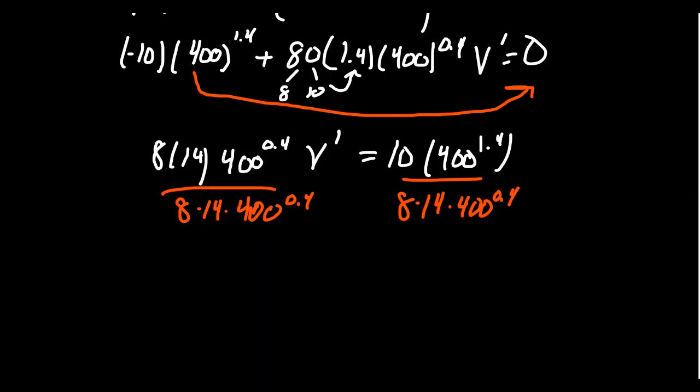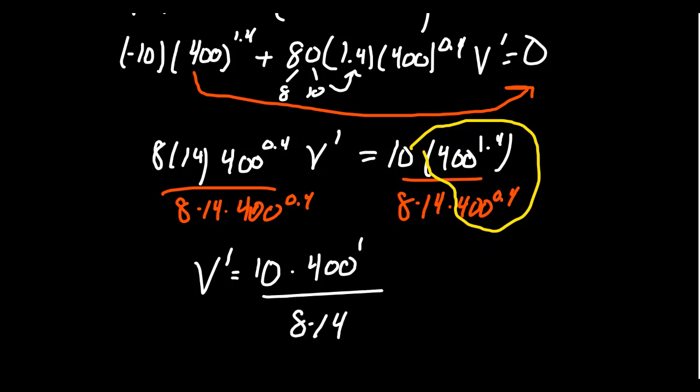Notice how we have 400 to the 1.4 on the top. We have 400 to the 0.4 on the bottom. This is an exponential expression. We have the same base. And since we're across the fraction bar, we're going to subtract the exponents. And so we end up with the change of volume to equal 10 times 400 to the 1st power over 8 times 14. You'll notice that at this moment, we just have to take 400 to the 1st power. That's pretty easy. That's just 400. So we don't have to compute any exponent and actually they cancel each other. The exponents cancel each other out. And so no irrational numbers were ever necessary because in the end, the irrational numbers cancel out.